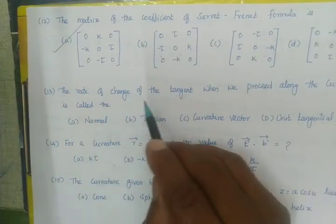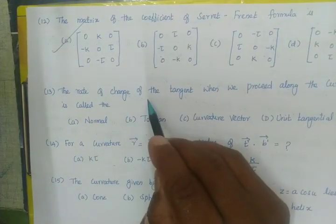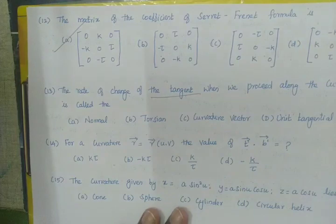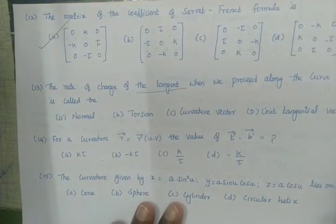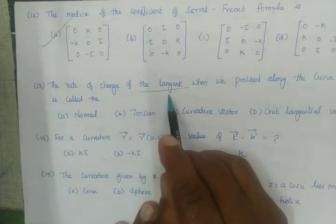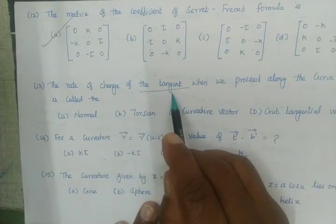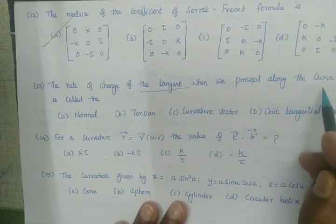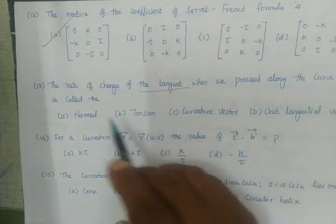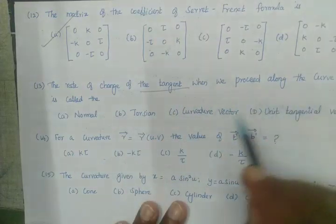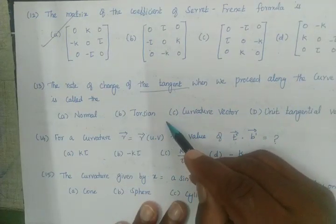The rate of change of the tangent when we proceed along the curve is called the curvature vector.